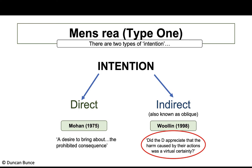To summarise indirect or oblique intent: the test is one of virtual certainty as established in Woollen. In an exam problem scenario, if it is unclear whether the defendant desired the outcome, applying this test clarifies whether oblique intent is present.